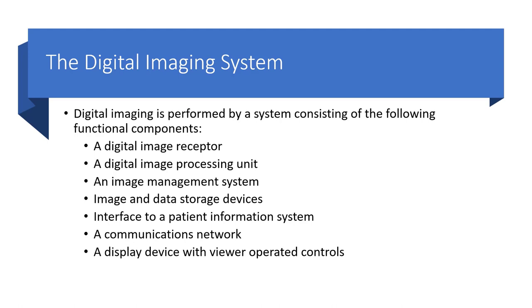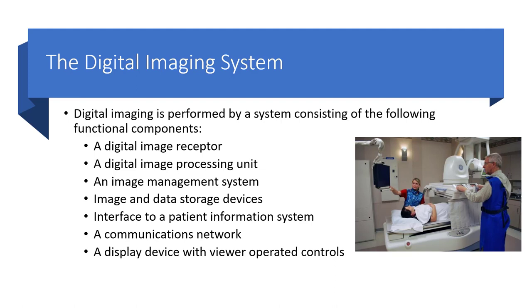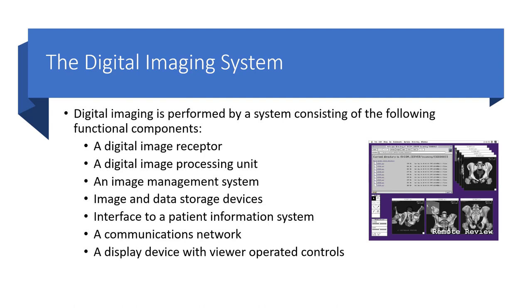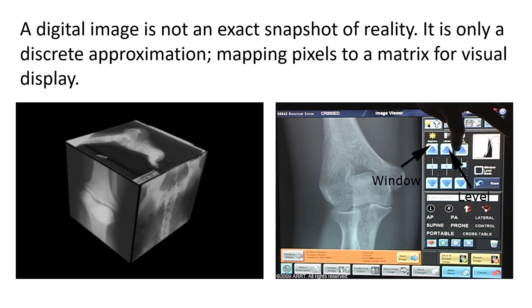A digital imaging system is comprised of the following components: a digital imaging receptor, a digital image processing unit, an image management system, image and data storage devices, an interface to a patient information system, a communications network, and a display device with viewer operated controls.